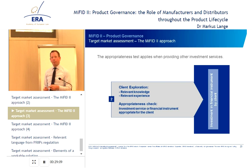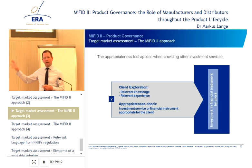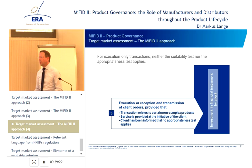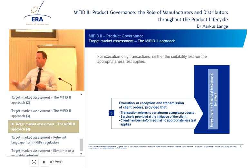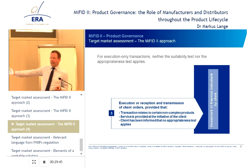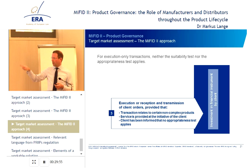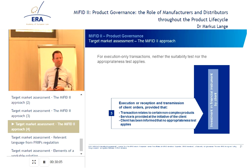Looking briefly at the suitability test under MiFID II: client knowledge, experience, ability to bear losses — which is a new aspect explicitly mentioned — and risk tolerance. You need to recommend a suitable, individually relevant product. If this is what you need to do at point of sale when advising clients, then you need a manufacturer which envisages this and a product pre-selection which anticipates it. The same applies for the appropriateness test. For execution-only business, certain criteria and provisos must be fulfilled, and the manufacturer needs to anticipate non-complex product requirements.